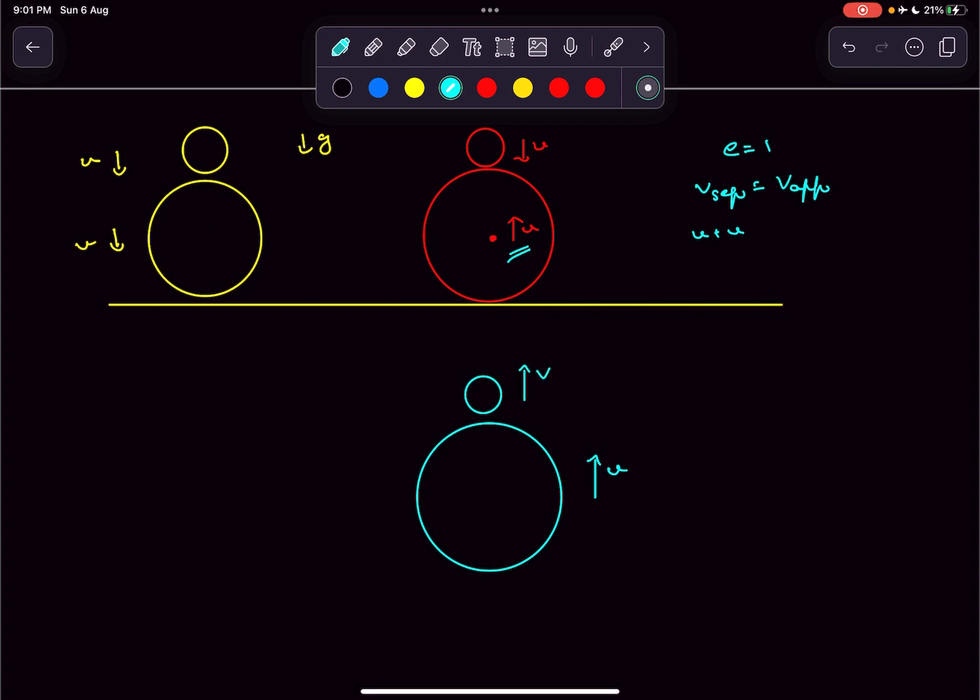If we determine v, then our question is pretty much done. The approach velocity was u plus u. The separation velocity is going to be v minus u.